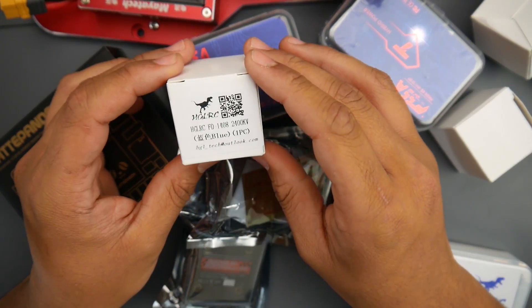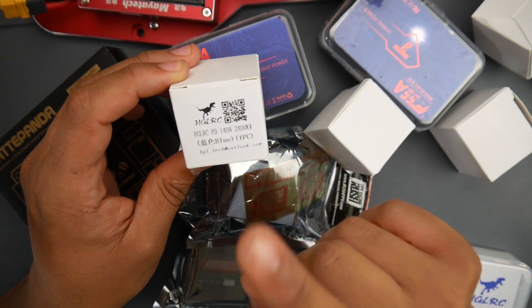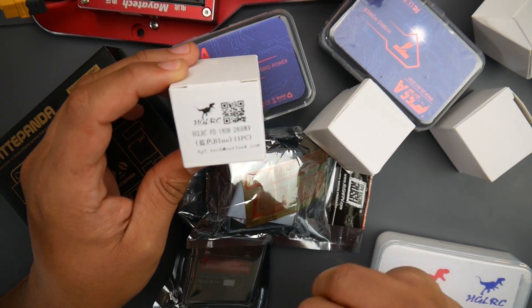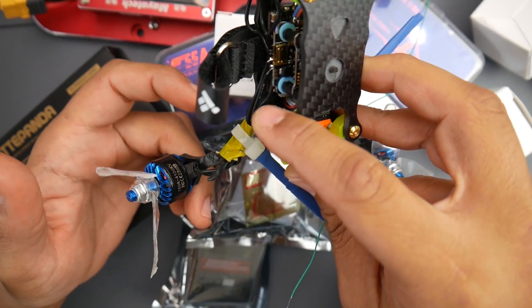The HJLRC 1408 2400 KV which are going on this build here which I broke, but first I need to cut a new arm for it.